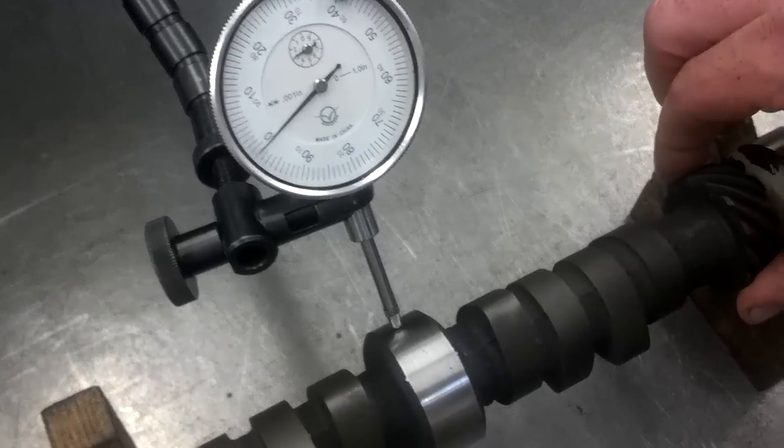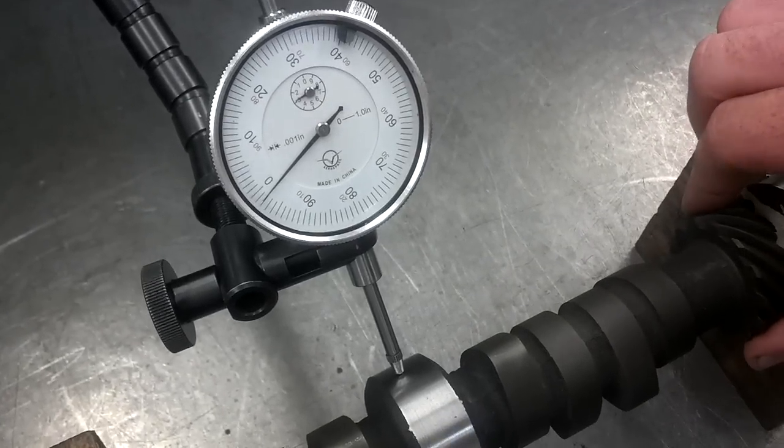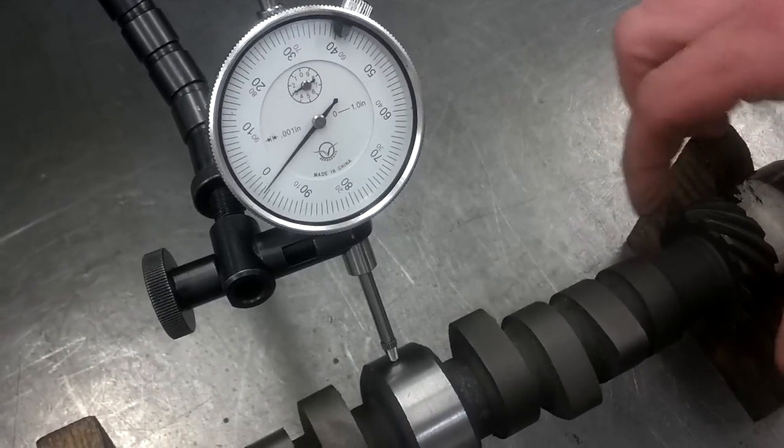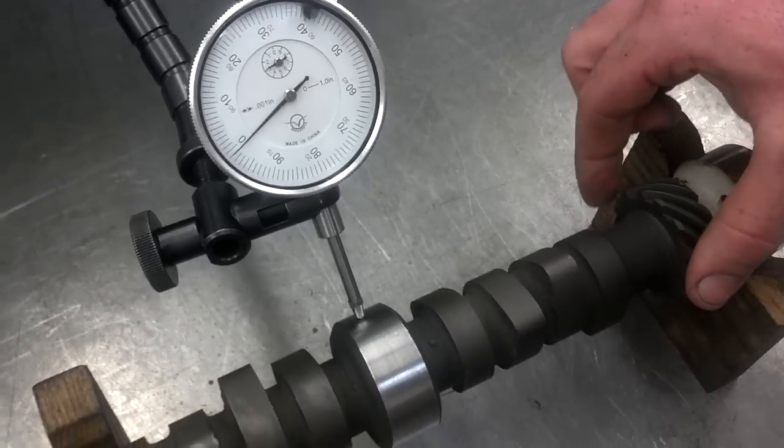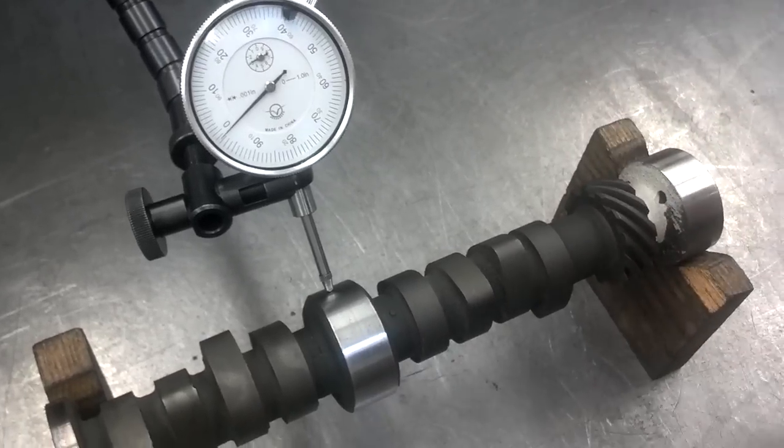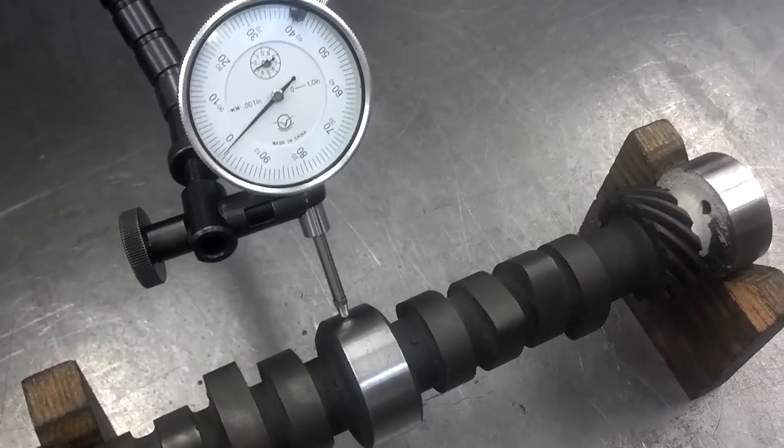And it looks like at that point, we're two thousandths of an inch away from our zero. So we have roughly two-thousandths of an inch of run-out. In other words, the camshaft is bowed just a little bit.